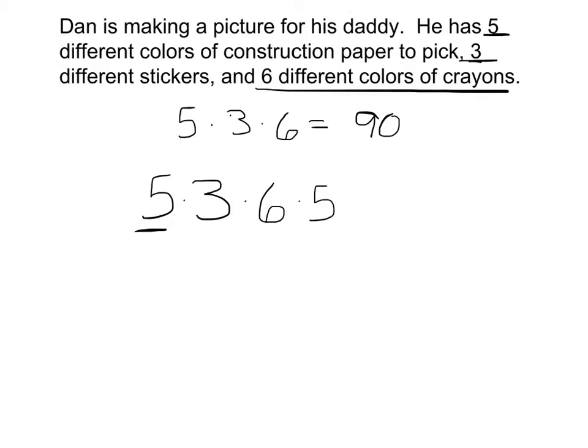So this is the number of construction papers. This is the number of stickers. This is his choice for the first color with the crayons. This is his choice for the second. Now he has 450 different ones he can make.